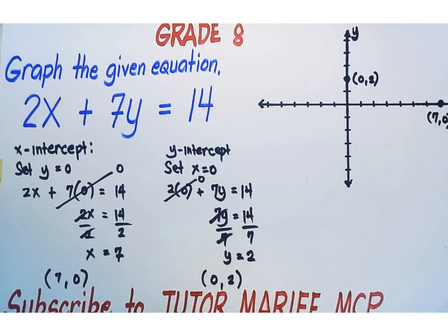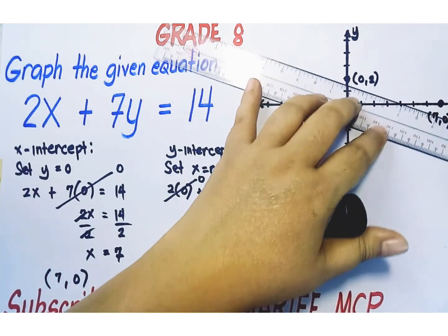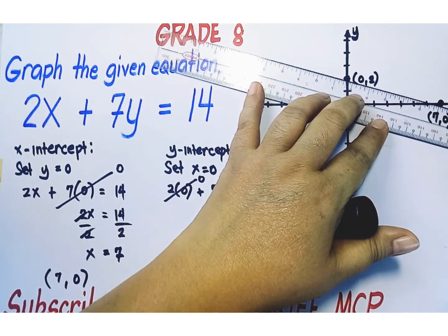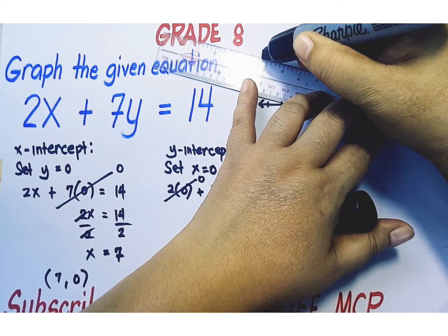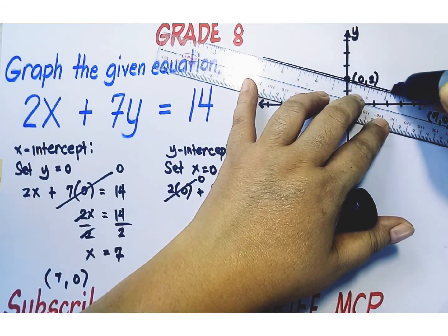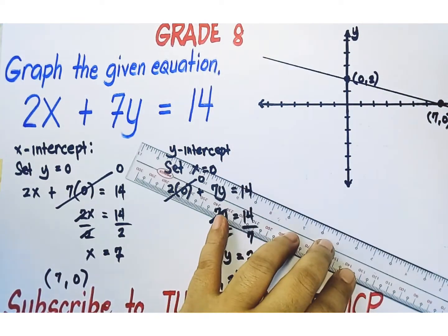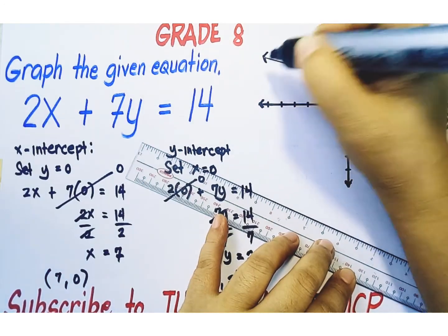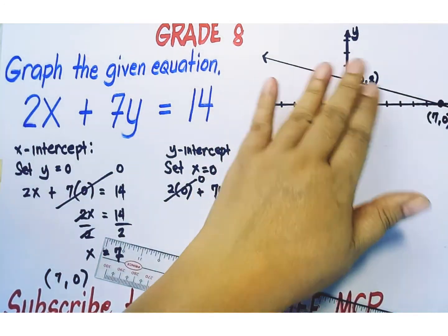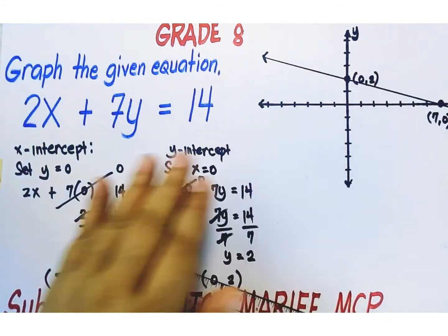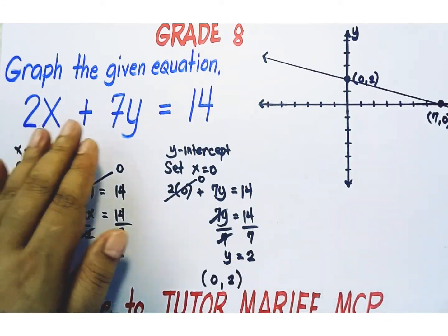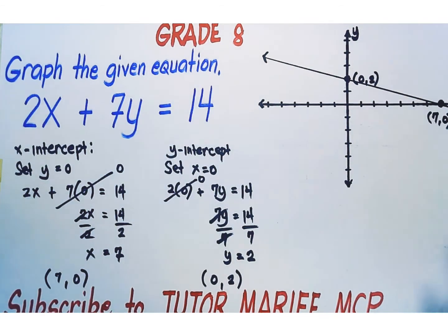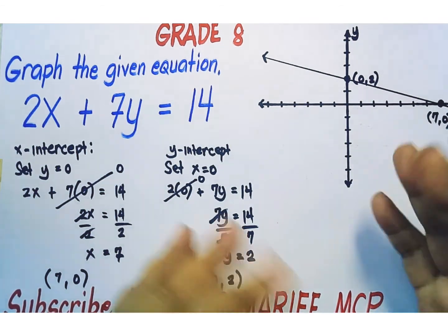Let's connect the two points. That's it — this is the graph of the given linear equation 2x + 7y = 14, and we're done.